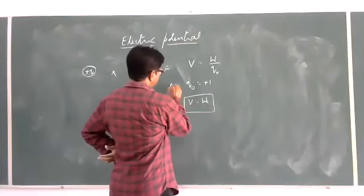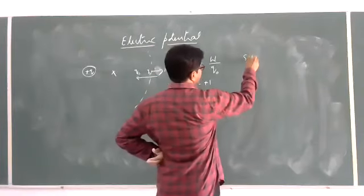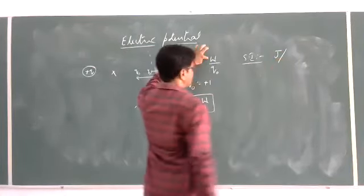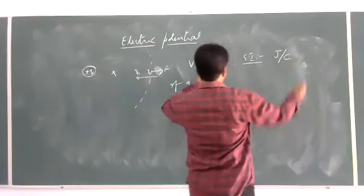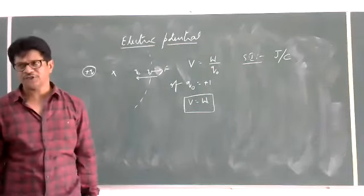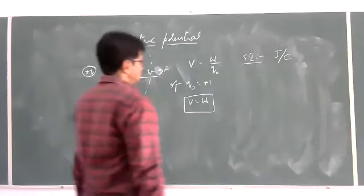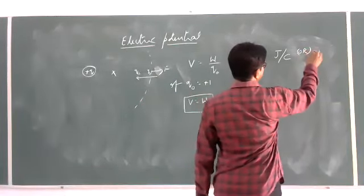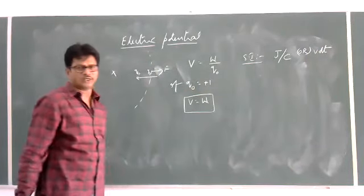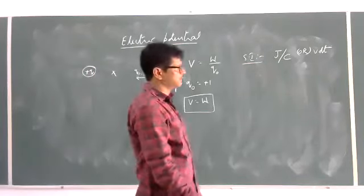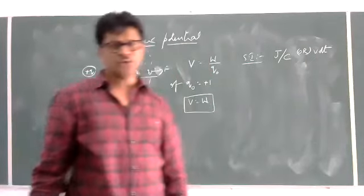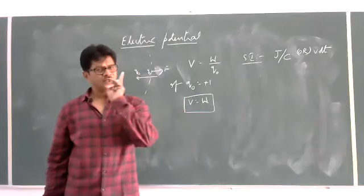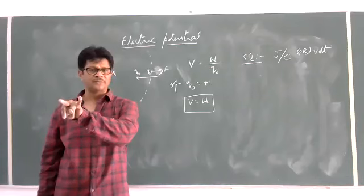Then what is the SI unit? The SI unit of potential: work done is in joules, charge is in coulombs, so the SI unit is joule per coulomb. Joule per coulomb is the SI unit of potential. Or the practical unit is volt, denoted by capital V. It is also denoted by the symbol V.